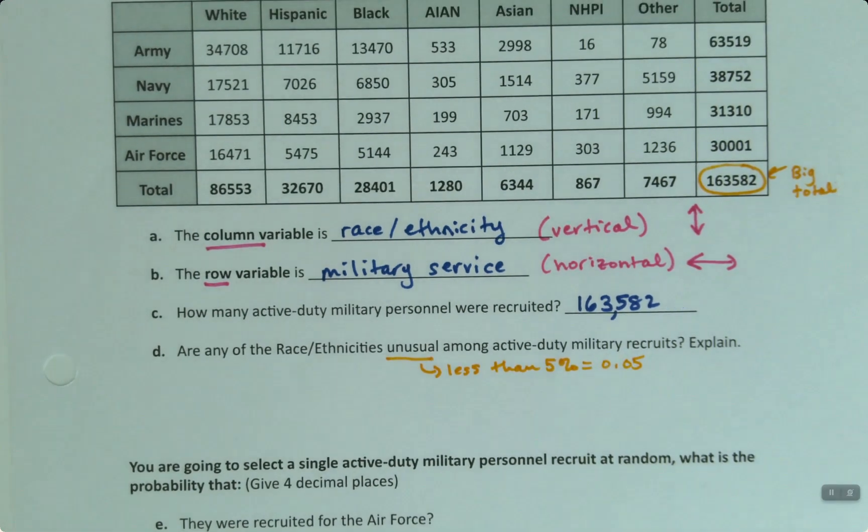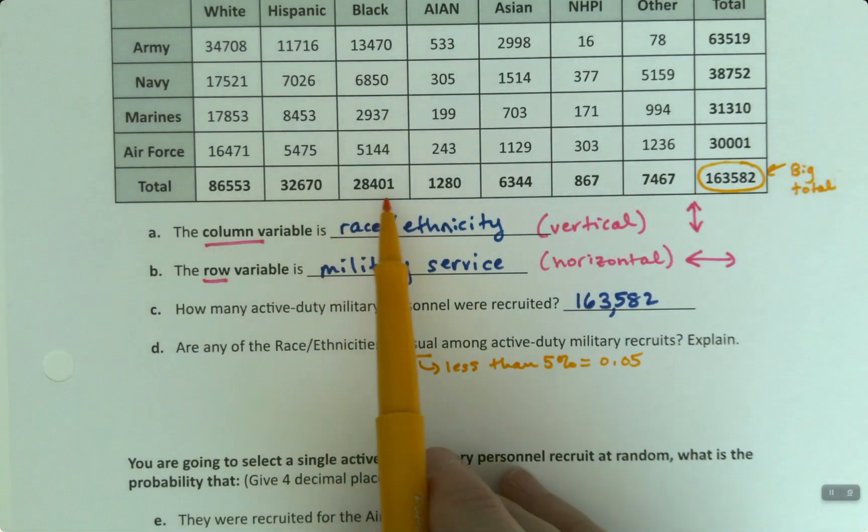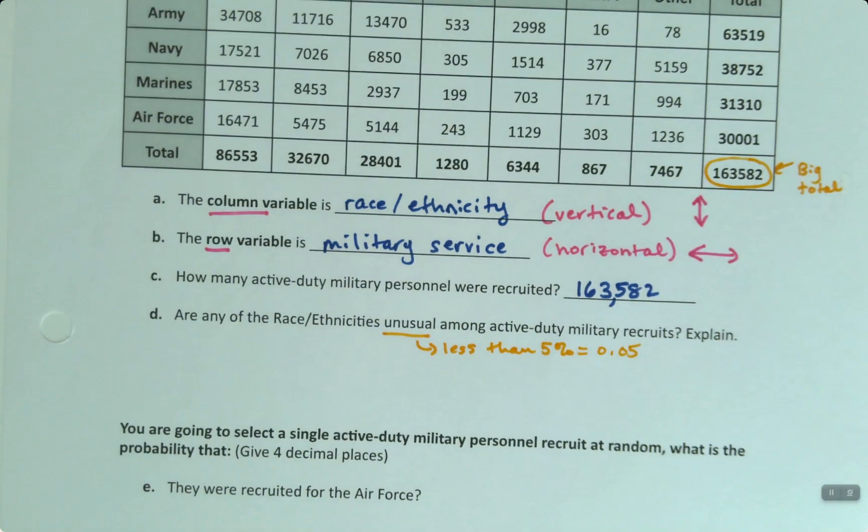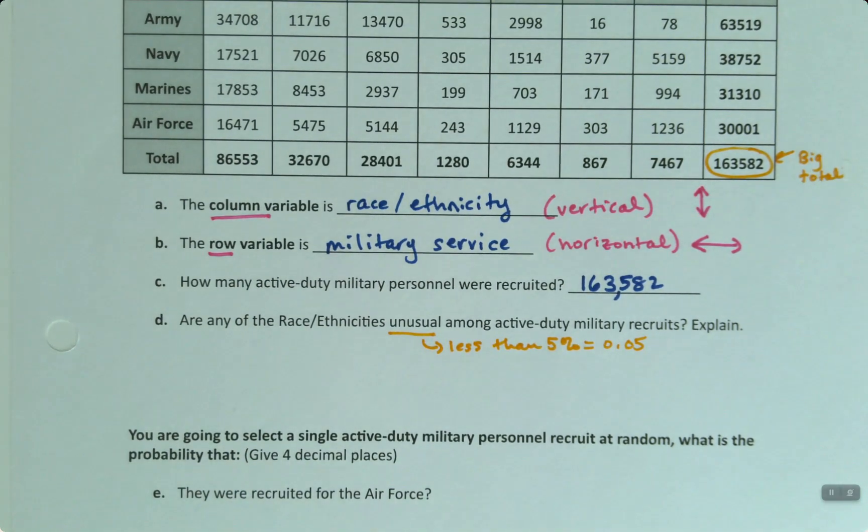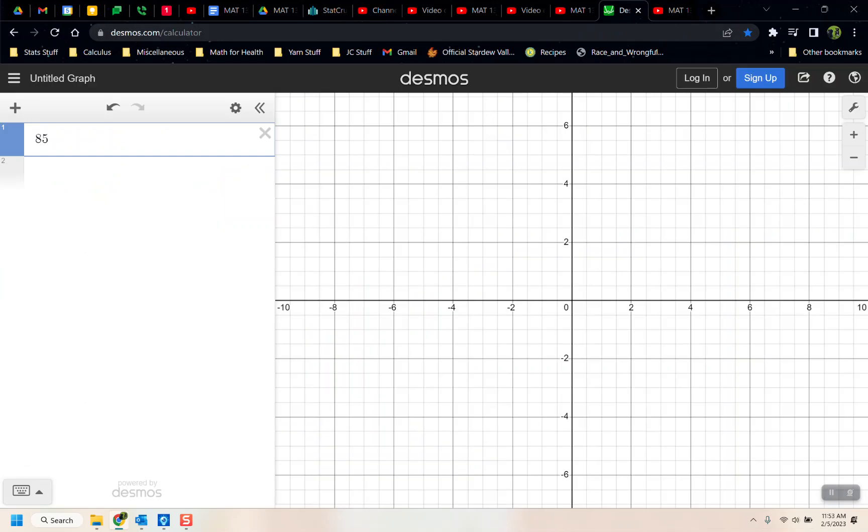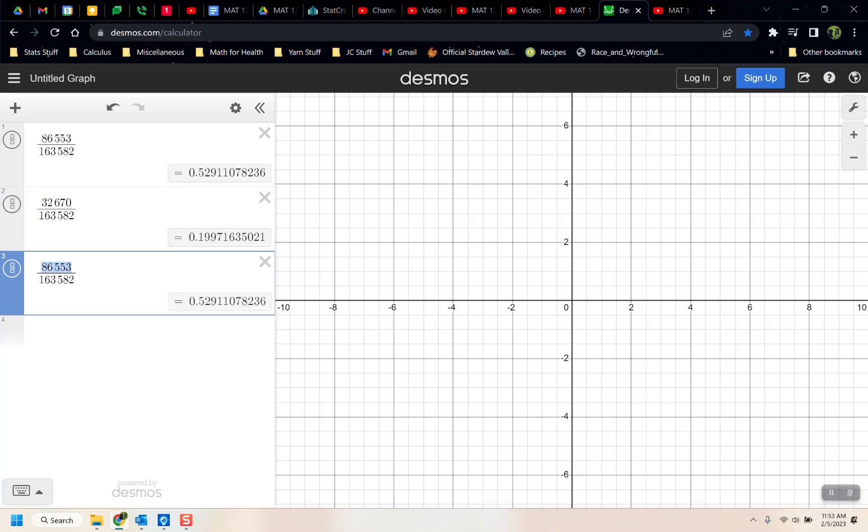Because what you would do is you would take your races and ethnicities, and you would divide them by this guy right here. So if I take 86,553 and divide it by... let me grab decimals real quickly. So 86,553 divided by 163,582. I can see that is definitely not unusual. But then what about the Hispanic? So that would be 32,670. Nope, that's not unusual either. Then what about black? That's 28,401. Nope.